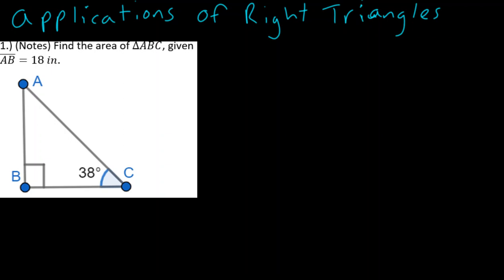Given AB is 18 inches. We see here AB is 18 inches, and we want to find the area. So it's important to first note, what's the area of a triangle? It is the base times the height, all divided by 2. And notice this is clearly the height, however, we do not have the base.